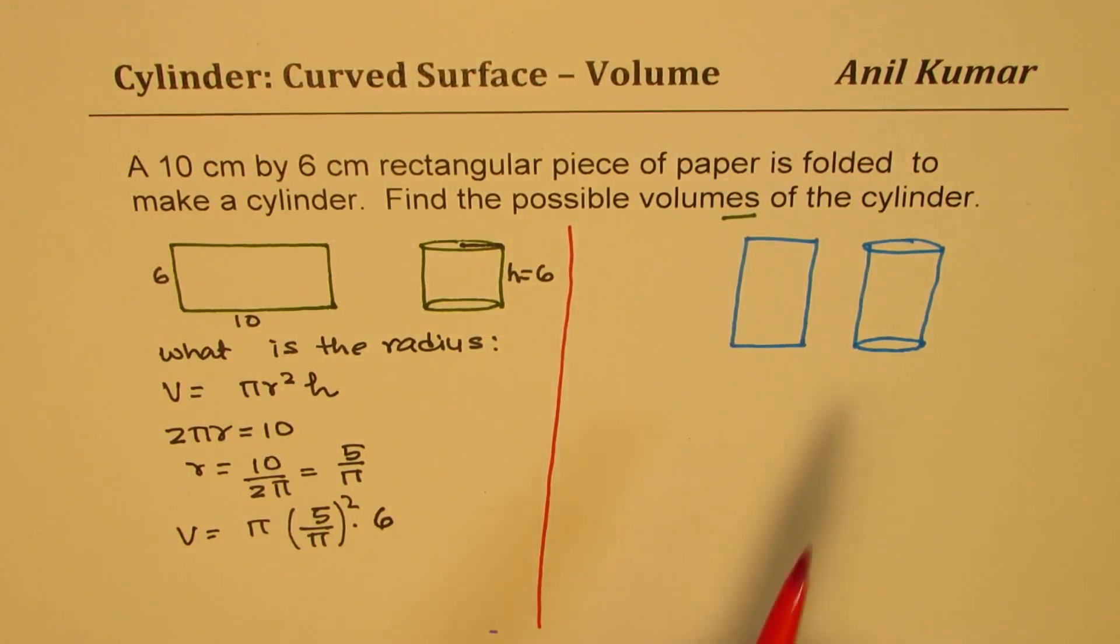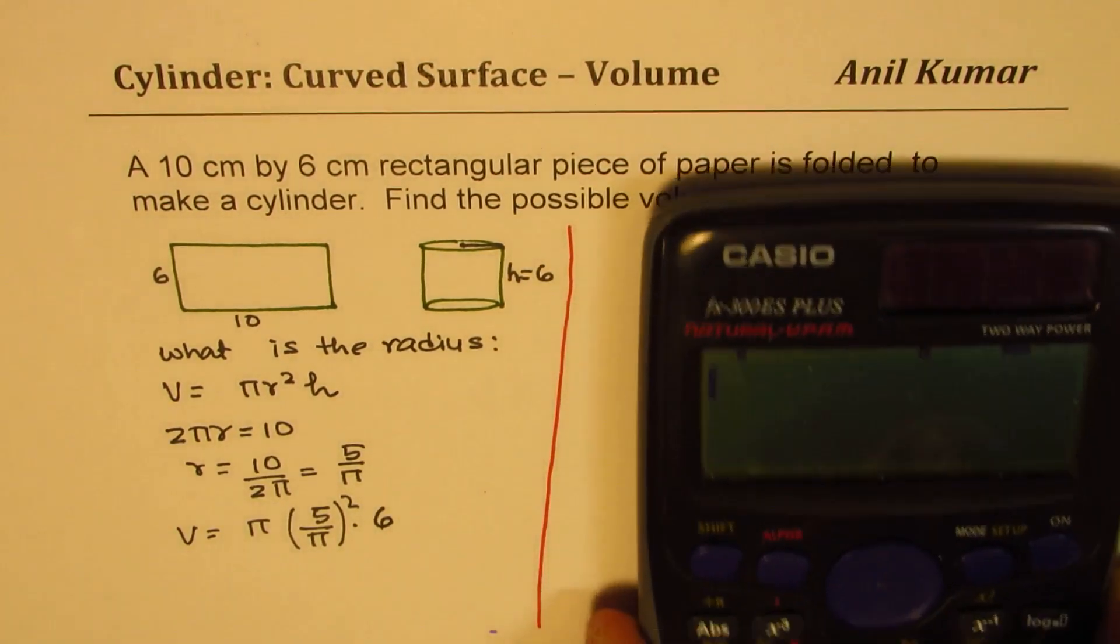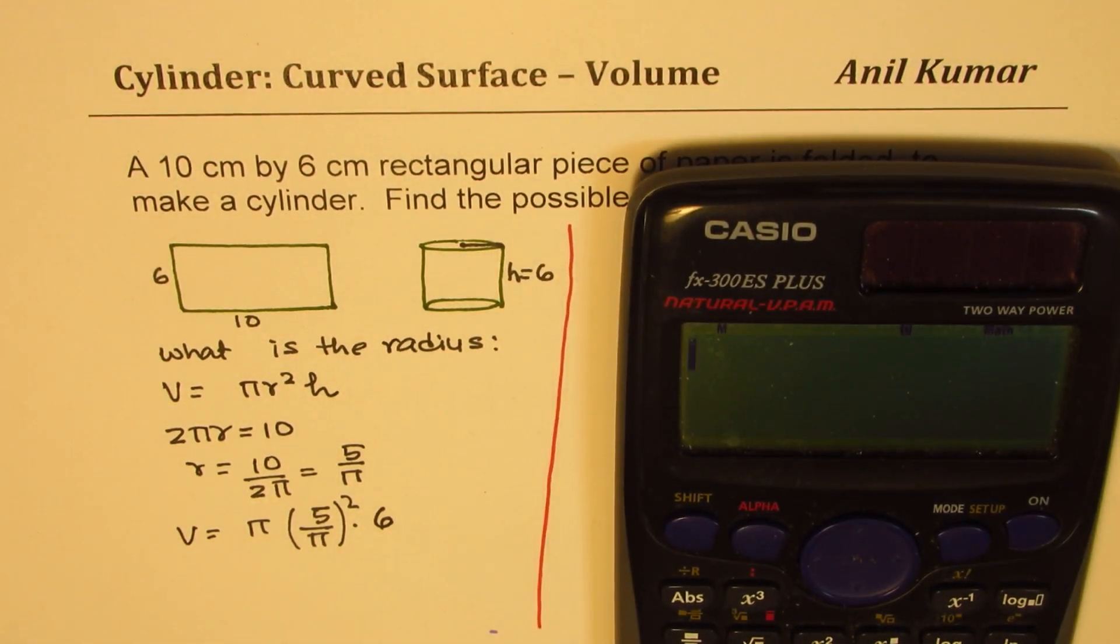Can you apply the same method and solve the other one? And let me calculate this answer. So let's calculate this answer. So pi, so we have, let's use 3.14 for pi.